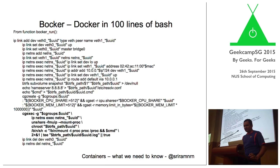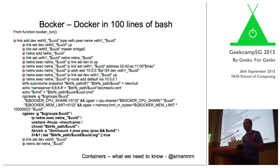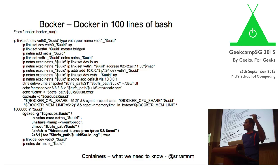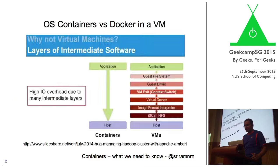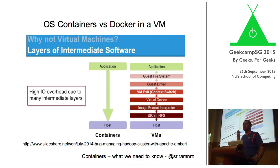What really happens is there's a cgroups call being made. Cgroups is a Linux feature where you have container grouping and you can set resource groups and say how much CPU, how much RAM should go for this set. When I say 'application' in the diagram, that's actually the cgroups call being made.